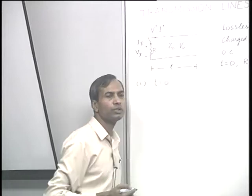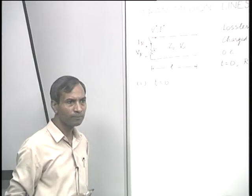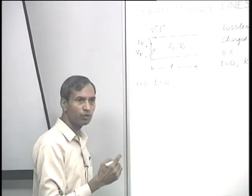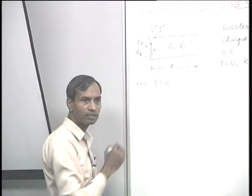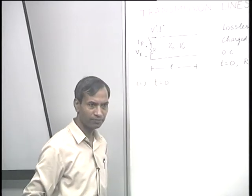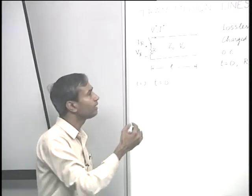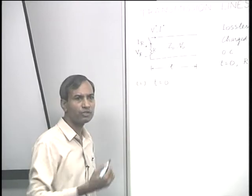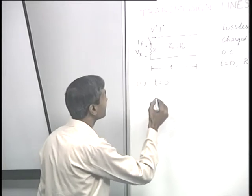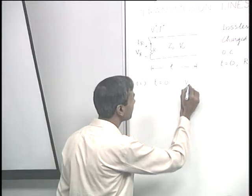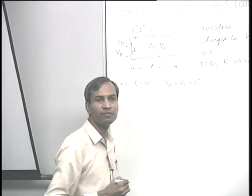The line is charged to a voltage V naught — we can consider it like a voltage source of voltage V naught. At T equal to 0, this will be connected to two entities: the resistance R and the transmission line. Depending on their relative values, this voltage source will share its voltage across these two entities. Therefore, V R is going to be equal to V naught plus V plus.